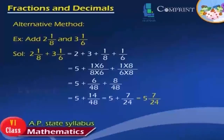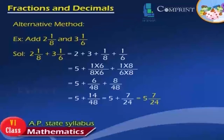Example: add 2 and 1 by 8 plus 3 and 1 by 6. The solution involves adding the whole parts to get 5, then finding equivalent fractions with a common denominator of 48: 6 by 48 plus 8 by 48 equals 14 by 48, simplified to 7 by 24. The final answer is 5 and 7 by 24.